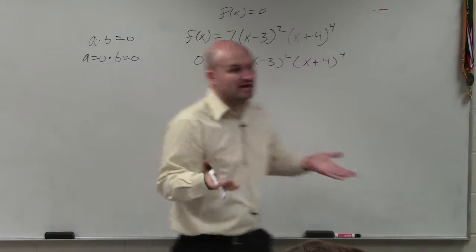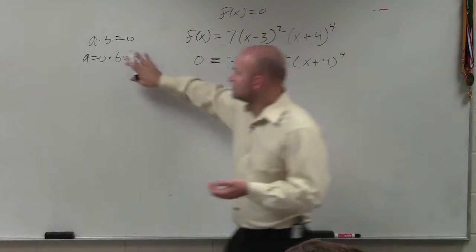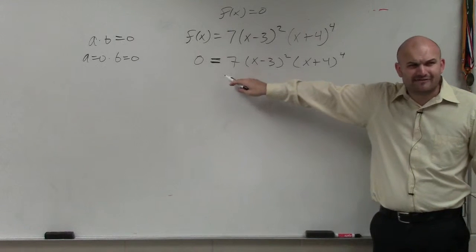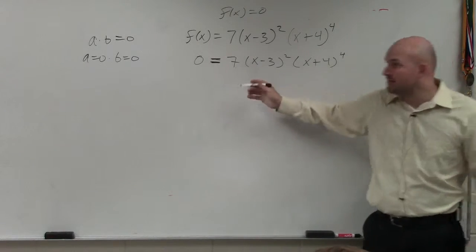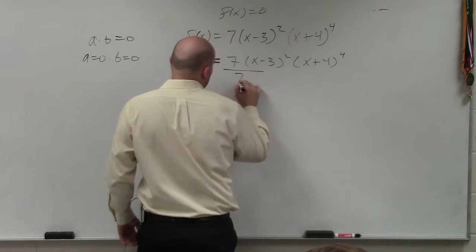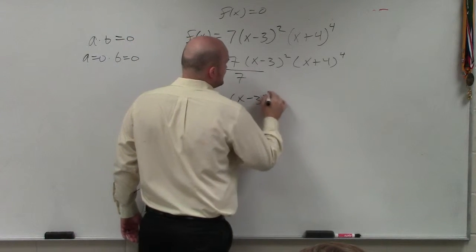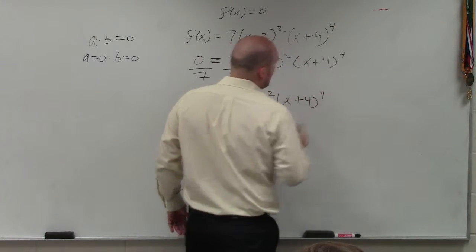If we're going to go ahead and set up the zero product property, I'm sorry, that's or, then we just multiply each and every factor. Notice how 7 is not a factor. We can easily just divide 7 out. So we have 0 equals (x - 3) squared times (x + 4) to the fourth.